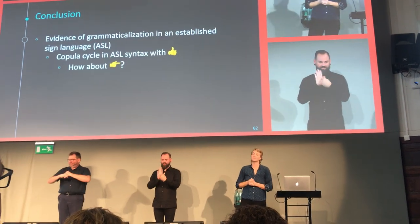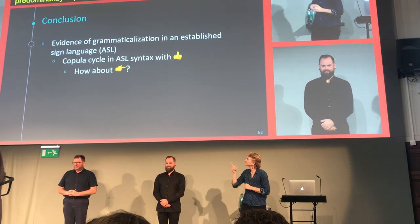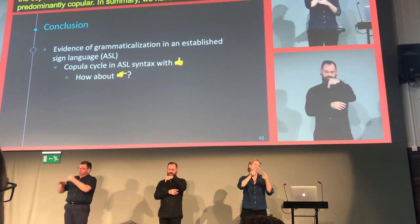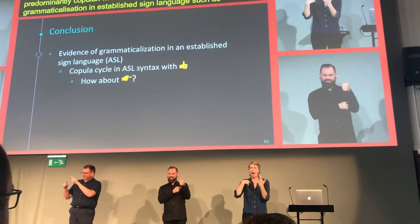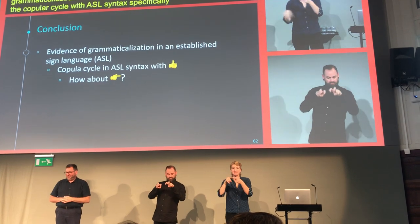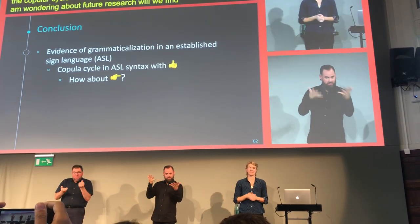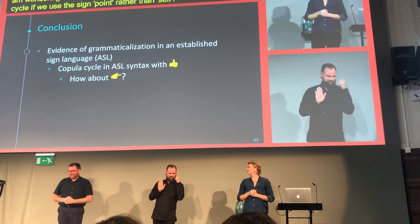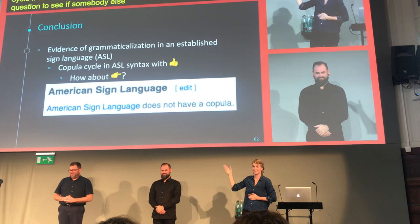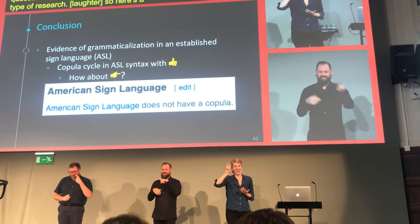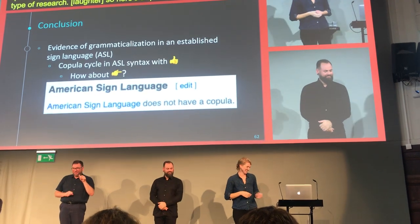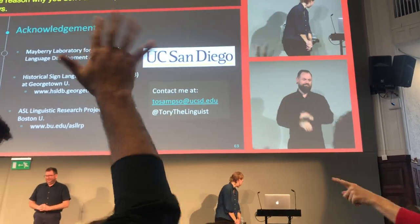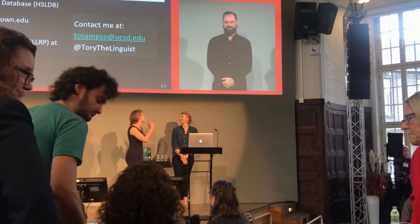In summary, we have evidence that there is grammaticalization in an established sign language such as ASL, using the copula cycle with ASL syntax specifically with the sign 'self.' For future research, I wonder: will we find the same kind of cycle if we use the sign 'point' rather than 'self'? I'm posing this question to see if somebody else may also be interested in this type of research. Thank you all very much.